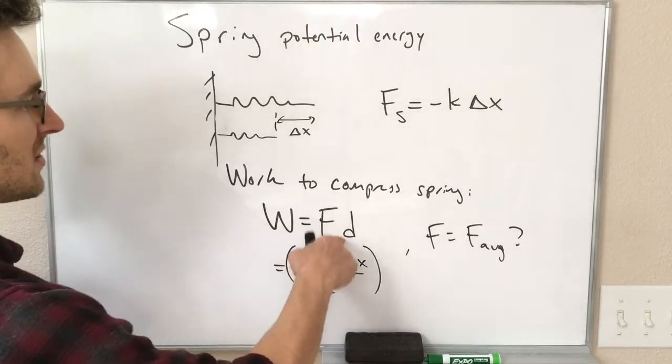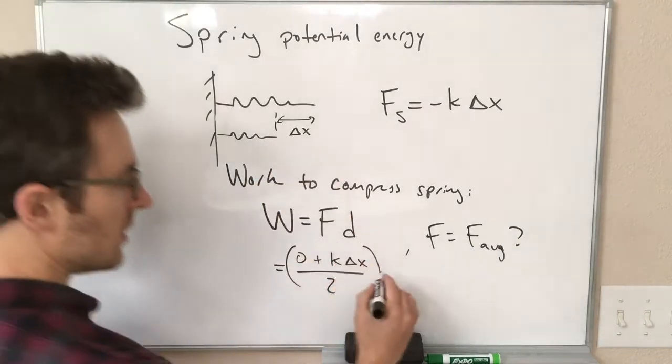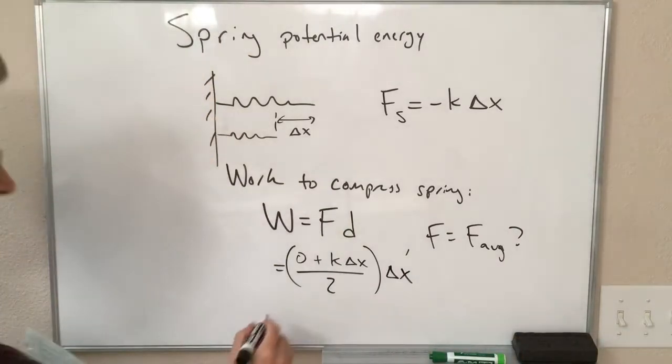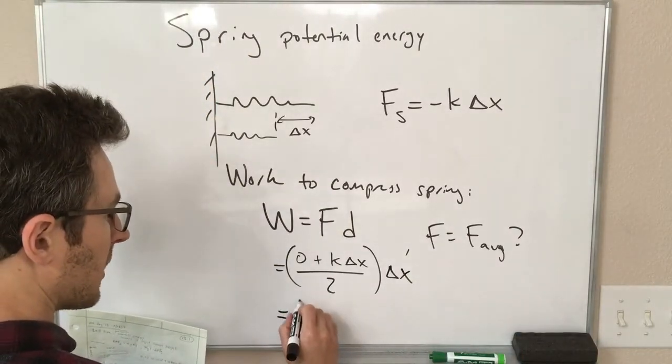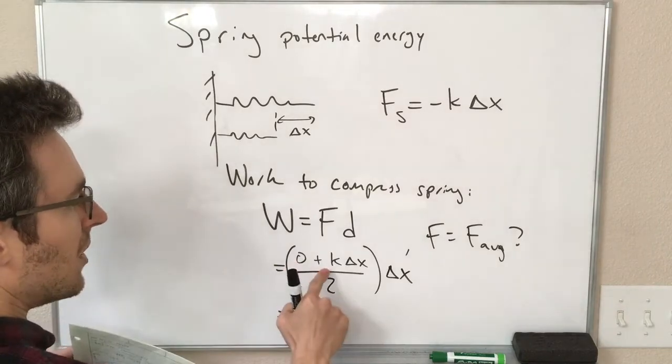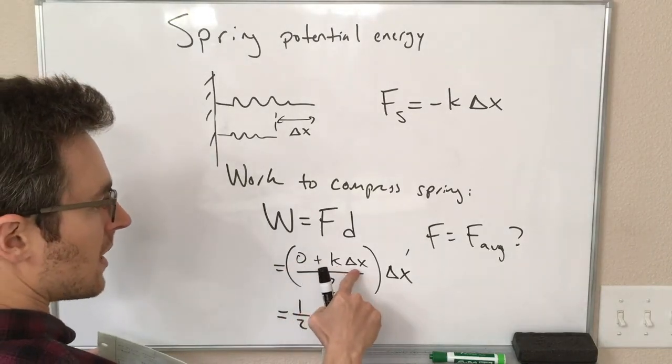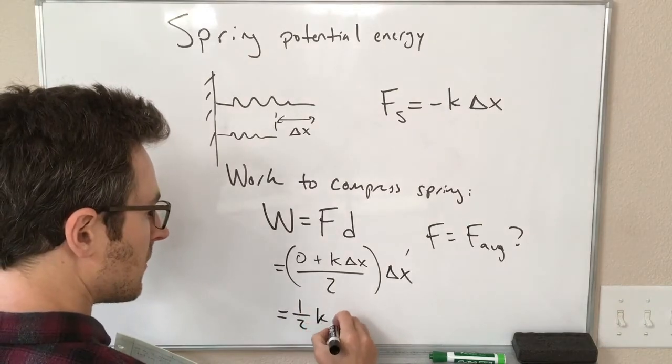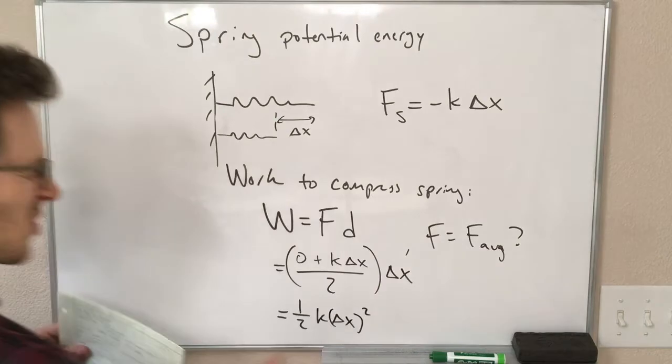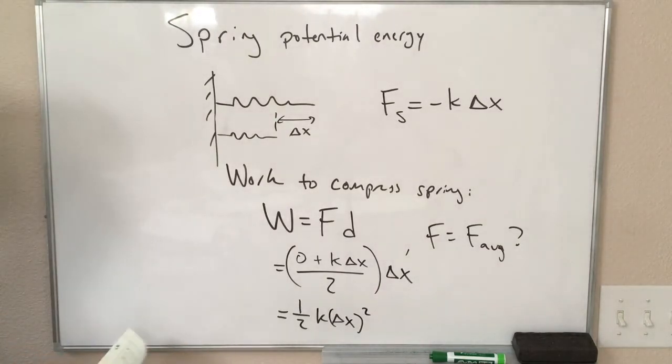The distance we're pushing, we already know, is this delta x. So the equation we get then for the work to compress the spring is one half times k delta x times delta x again. So one half k delta x squared is the work that I put into the spring to compress it.